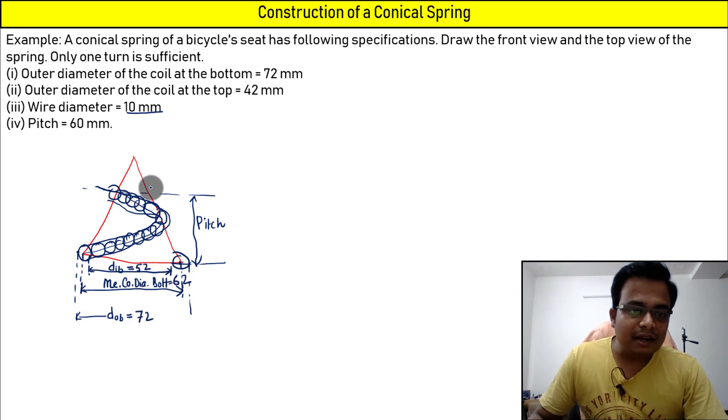In the same manner here also, here also there is an outer coil. Let me just try to make it: outer coil d_outer at the top. This has been given as 42.